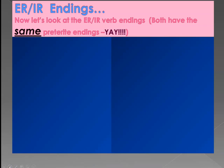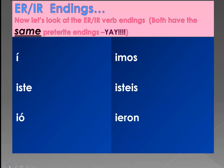Let's look at ER and IR endings — they both have the same preterite endings, which is great so we don't have to learn another set. They are: í, iste, ió, imos, isteis, ieron.